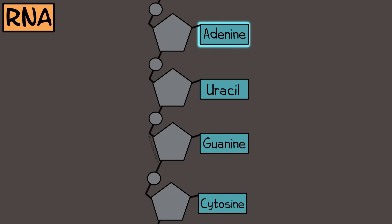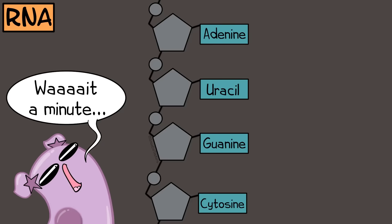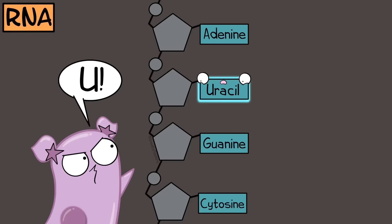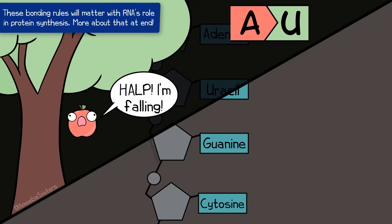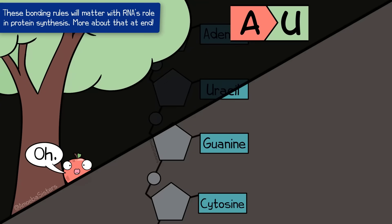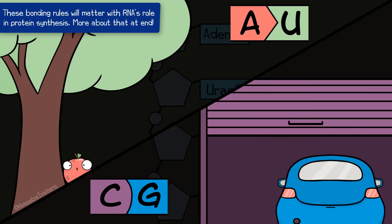The bases in RNA are adenine, uracil, guanine, and cytosine. Notice the different one? It's uracil. So you have to change that popular mnemonic device here. Instead of apples in the tree, maybe the apples are under. Car in the garage still works, though.